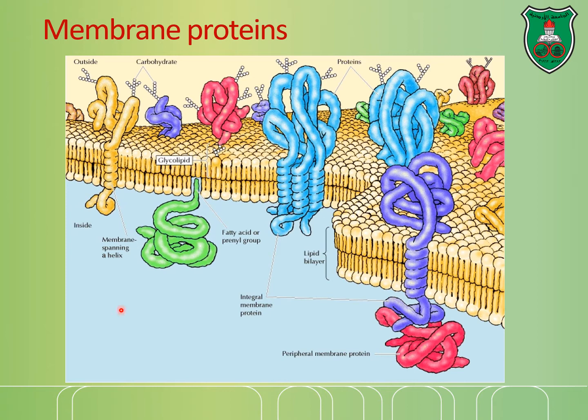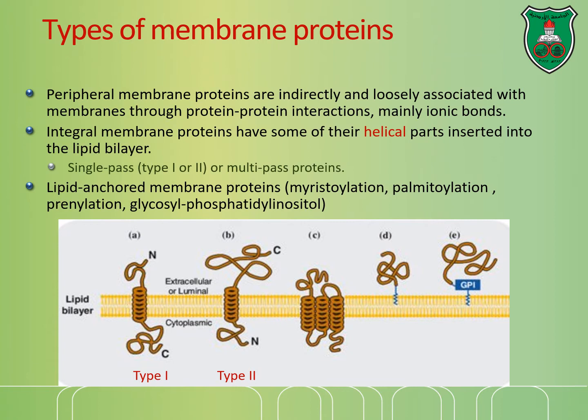Proteins can span the plasma membrane several times or just once, having only one transmembrane domain. There are proteins that associate with membrane protein molecules. Some proteins are glycosylated while others are not. Some proteins have a hydrophobic part that helps them associate with the plasma membrane. Overall, there are a variety of different types of membrane proteins.